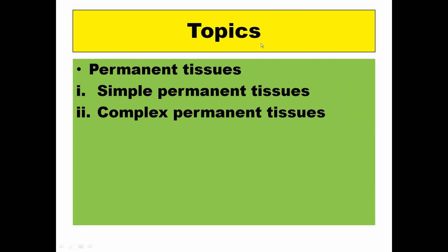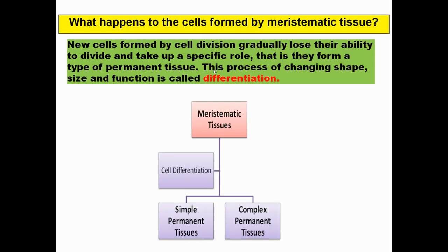Topics being covered in this tutorial: first, we need to discuss permanent tissue, its characteristic features, and its two basic types — that is simple and complex.